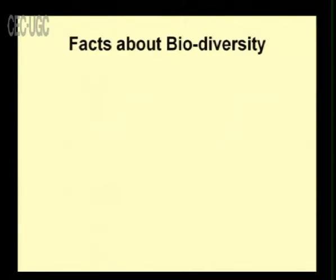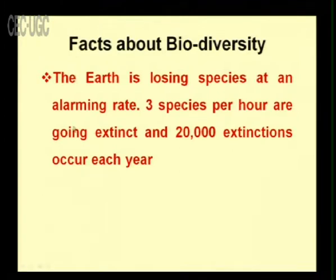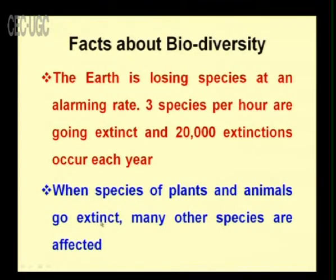Some facts about biodiversity: the earth is losing species at an alarming rate — three species per hour are going extinct, and 20,000 extinctions occur each year. This is really alarming because we are losing three species every hour and 20,000 species every year. When species go extinct, many other species are also affected because in an ecosystem all animals and plants are interrelated. When one species goes extinct, it affects the other components of the ecosystem as well.